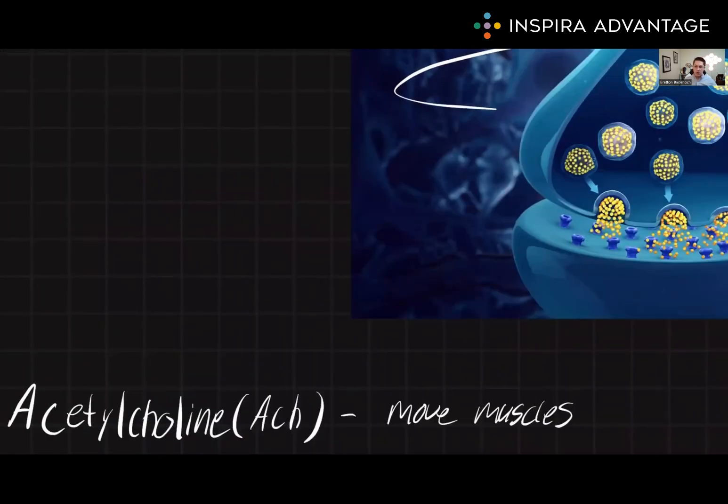Acetylcholine, which is used by the somatic nervous system to move muscles, is also used by the parasympathetic nervous system and in central nervous system. Really what you want to focus on for acetylcholine is it's what allows muscles to move, as well as the last signaling molecule in the parasympathetic nervous system and both the first signaling molecule in both the sympathetic and parasympathetic nervous systems.